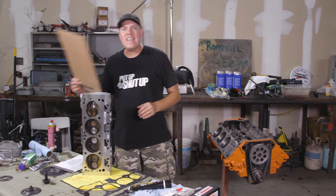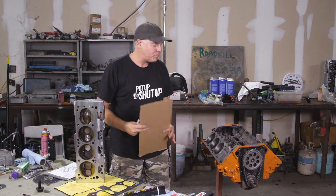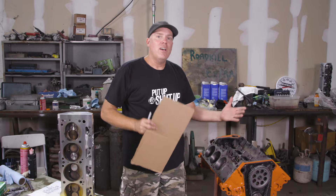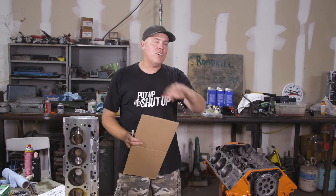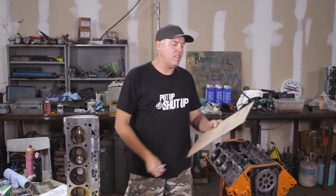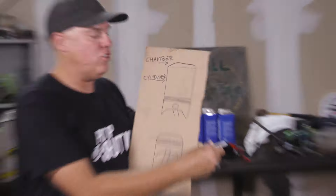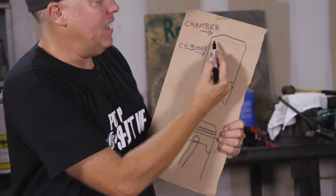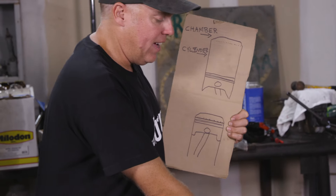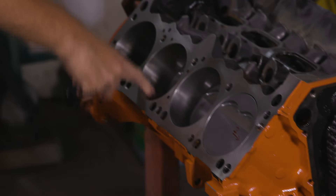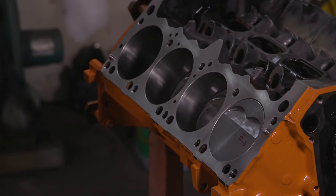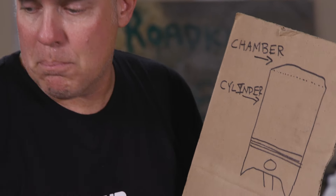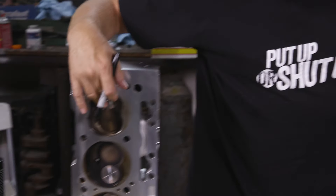So let's start with: what is compression ratio? Basically, it is the volume of a cylinder with a piston at bottom dead center compared to the volume of the cylinder with a piston at top dead center. Let's look at my handy-dandy drawing right here. What we've got here is the engine cylinder — the circle where the pistons go up and down. And up here, indicated by this dotted line, I've got the chamber in the cylinder head, which is this right here.